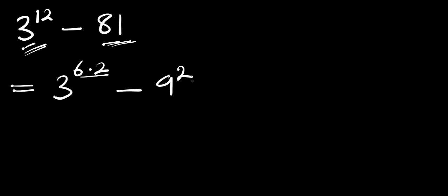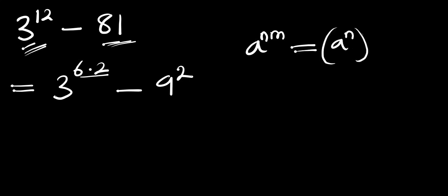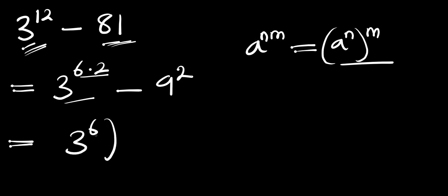The next thing we are going to do is make use of this identity: if you have a raised to the power of n times m, this equals a raised to the power of n, all raised to the power of m. We are going to apply this identity, which means we will have 3 raised to the power of 6, all raised to the power of 2.